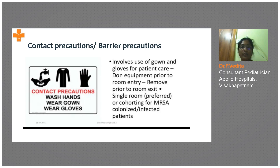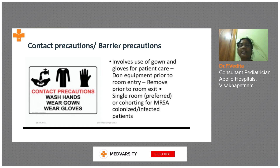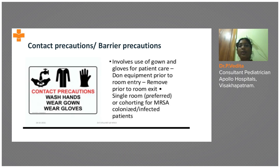A one-to-one ratio of nurse to patient should be allocated. If a similar infection or similar resistant organism is suspected, we can cohort those babies with proper distancing — at least four feet — and the same nurse can care for both babies. However, they must be isolated from the other healthy babies.